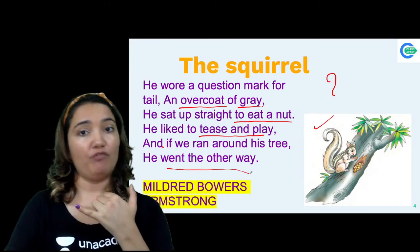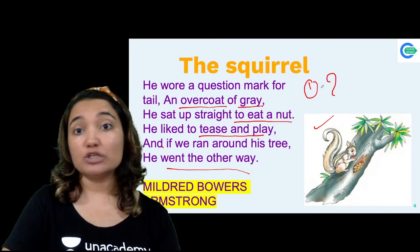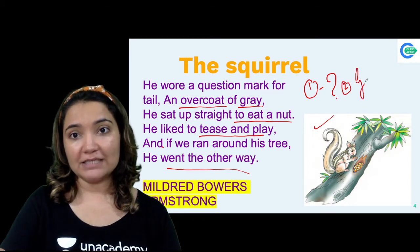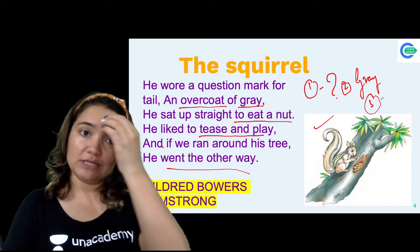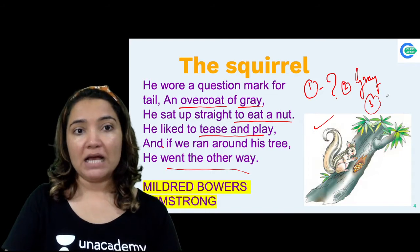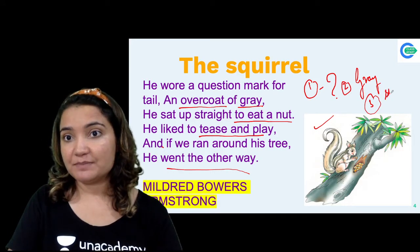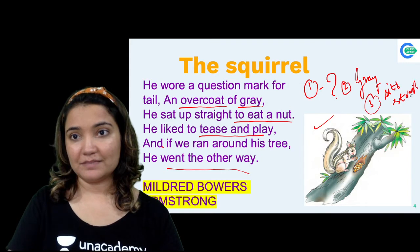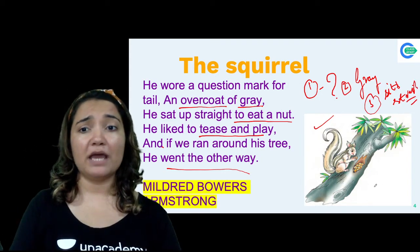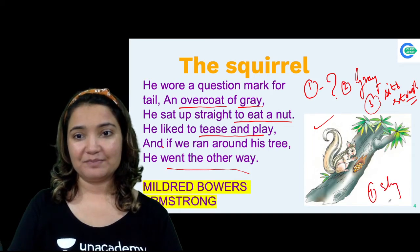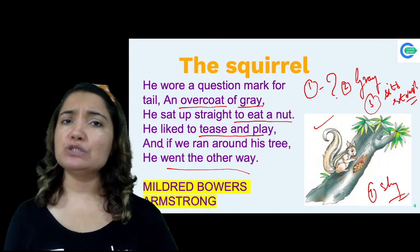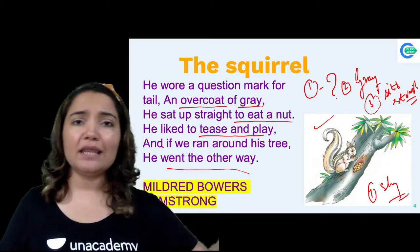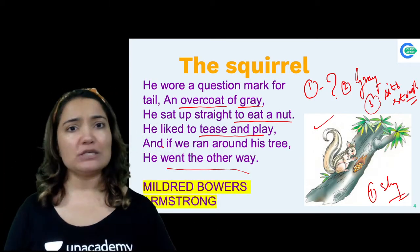So here are the features the poet has described: First, the tail in the form of a question mark. Second, the gray overcoat. Third, the way it sits straight. And fourth, its shy nature. These four traits are described in this small cute poem — just four lines to describe this little squirrel. That's all about the poem.